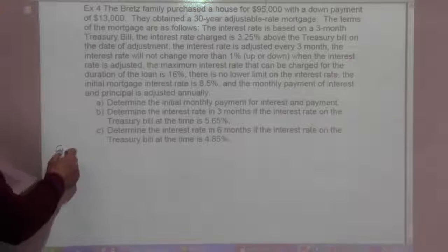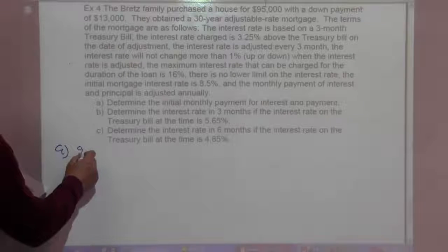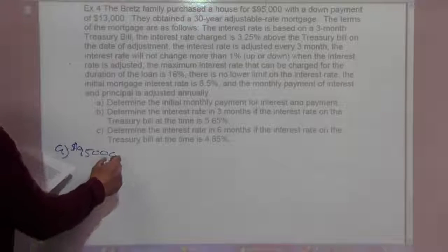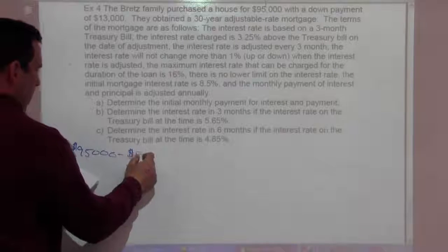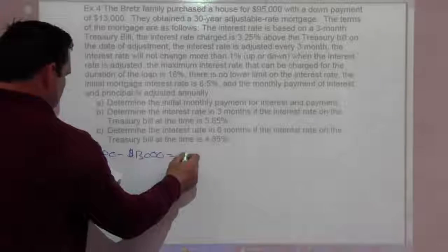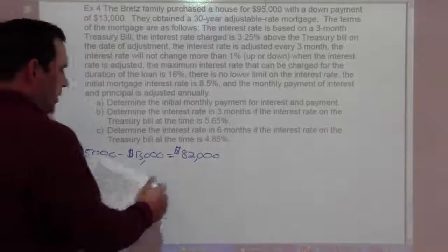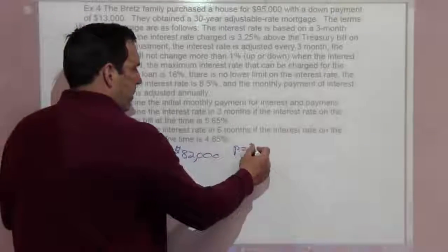So for A, $95,000 minus the $13,000 down is $82,000. So our P is $82,000.